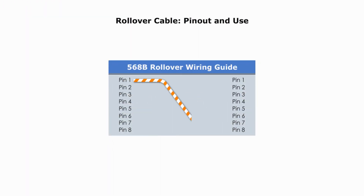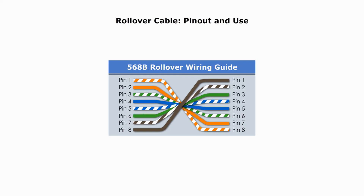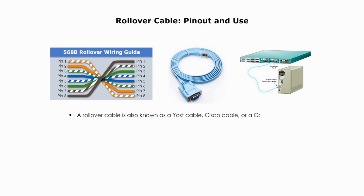We call it roll-over because the pinouts on one end are reversed from the other, as if the wire has been rolled over — pin 1 to pin 8, pin 2 to pin 7, and so on. A roll-over cable is also known as a yost cable, or Cisco console cable.